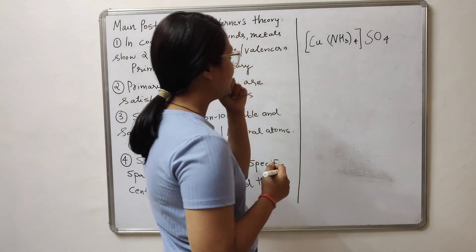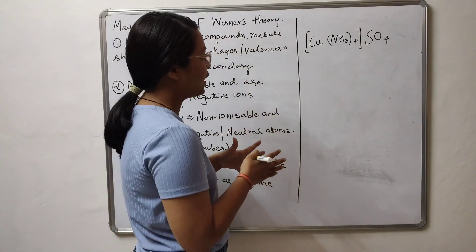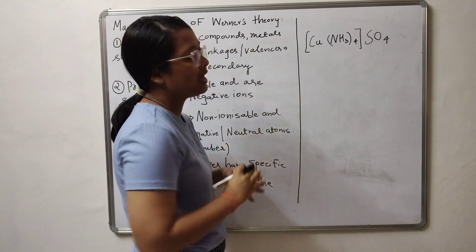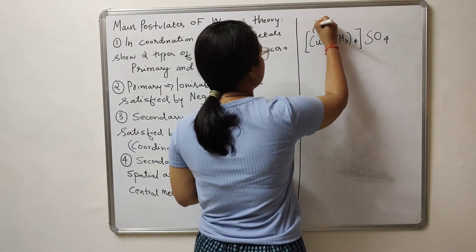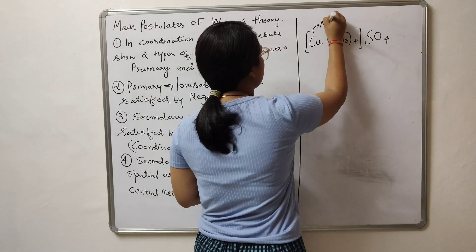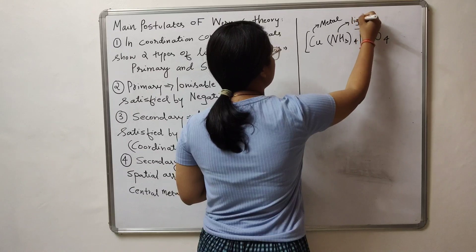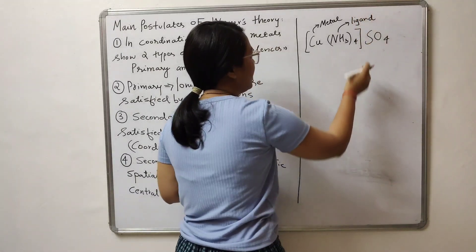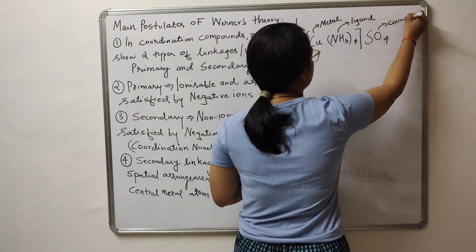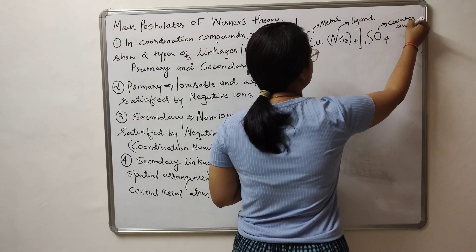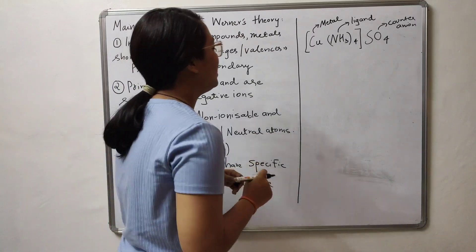Here we have an example which is a tetraamine complex of copper, and the balancing anion present is sulphate. Let us identify parts of it first. Copper is the metal, amine is the ligand, and sulphate is the counter-anion — it's negatively charged, so we will refer to it as a counter-anion.